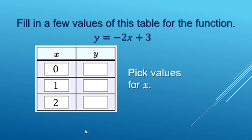Now that we have our x's, time to find the corresponding outputs or corresponding y values. So our rule was negative 2 times whatever x is plus 3.